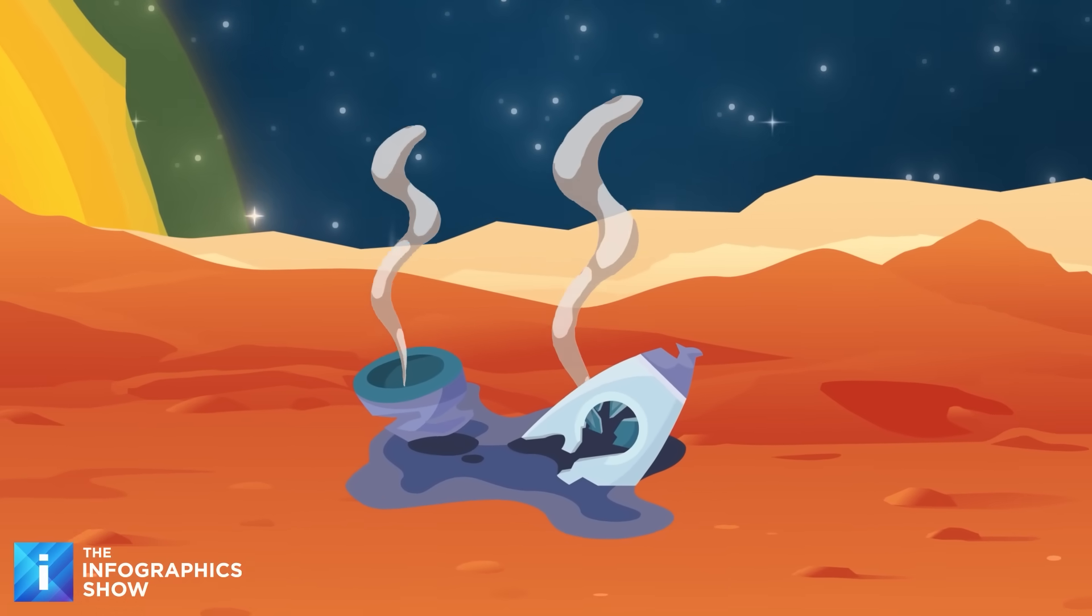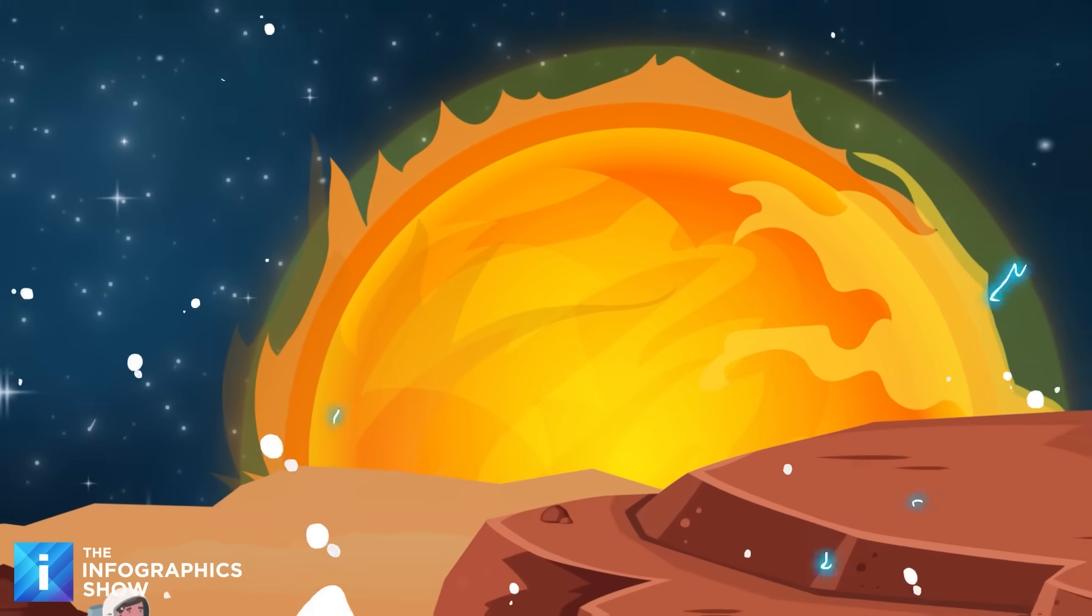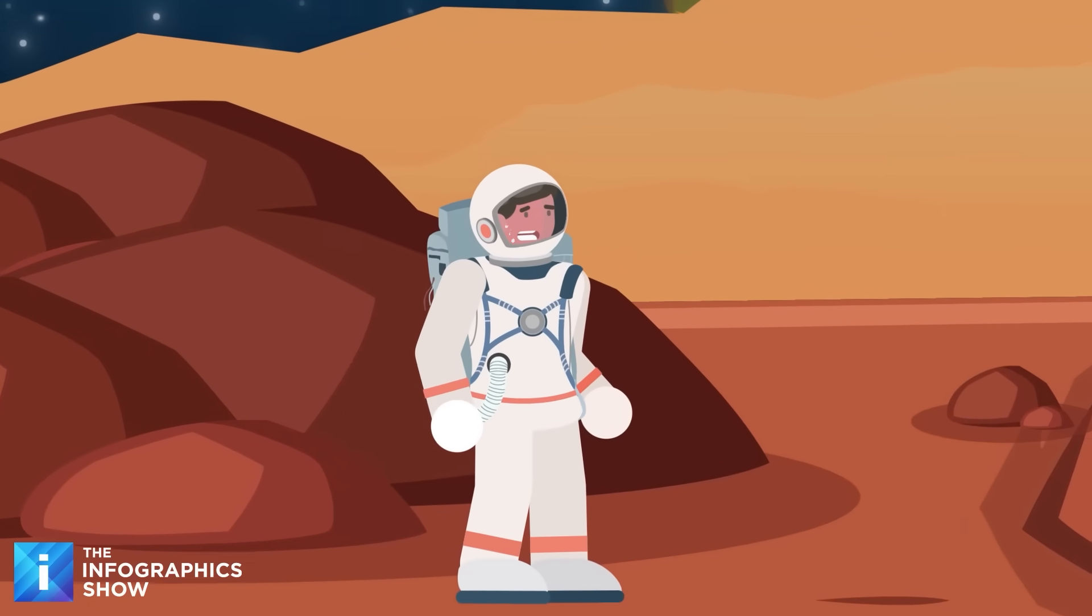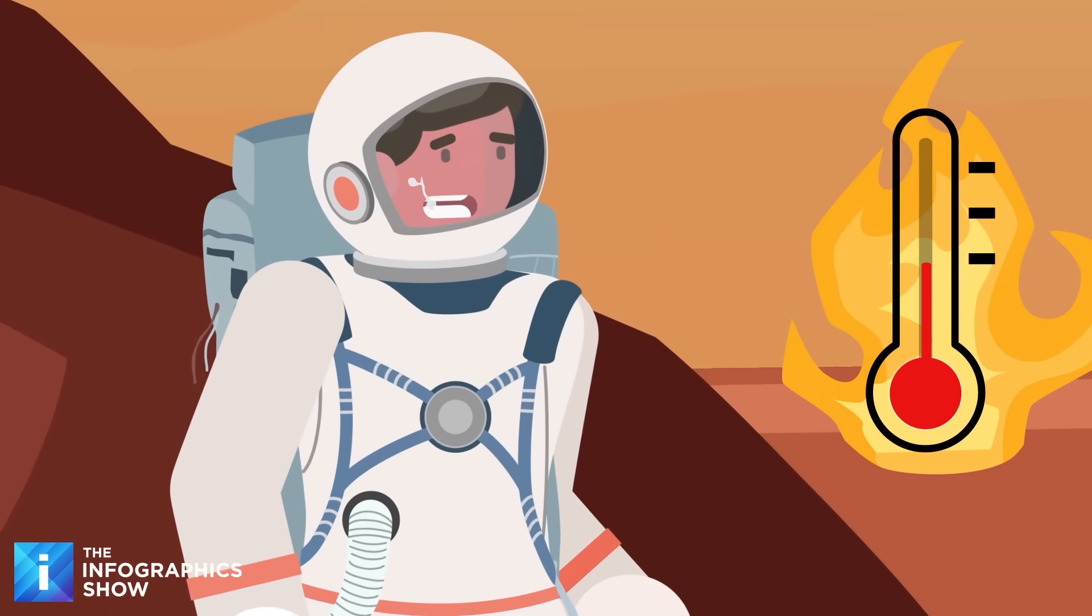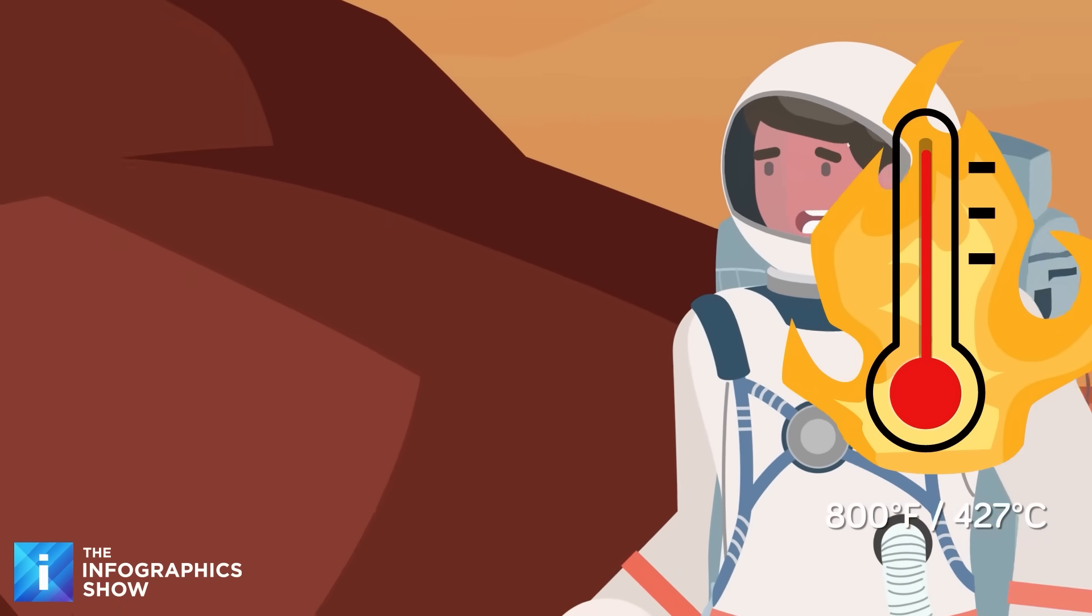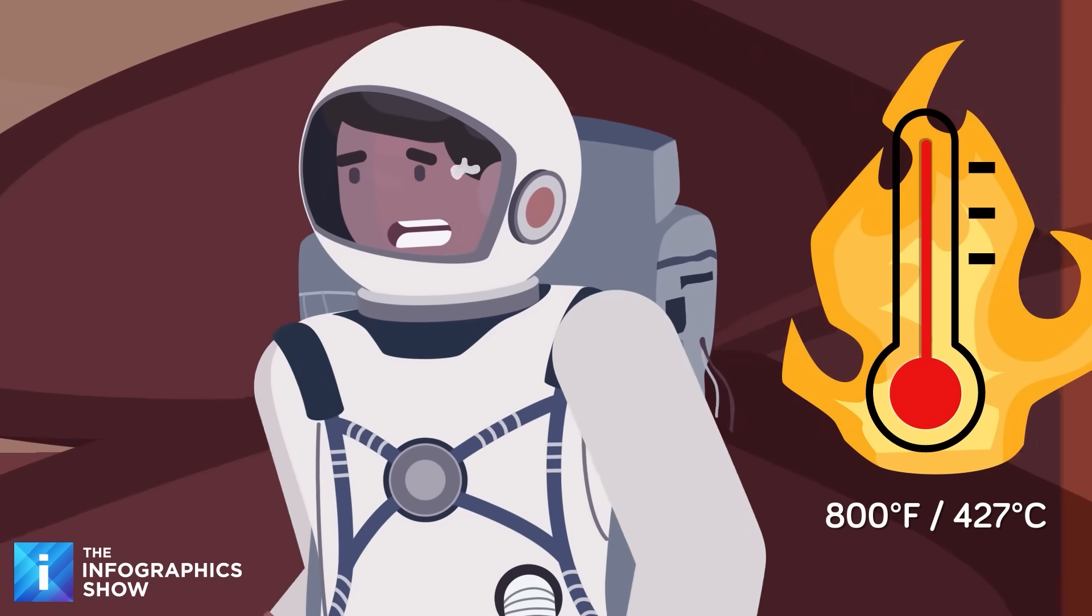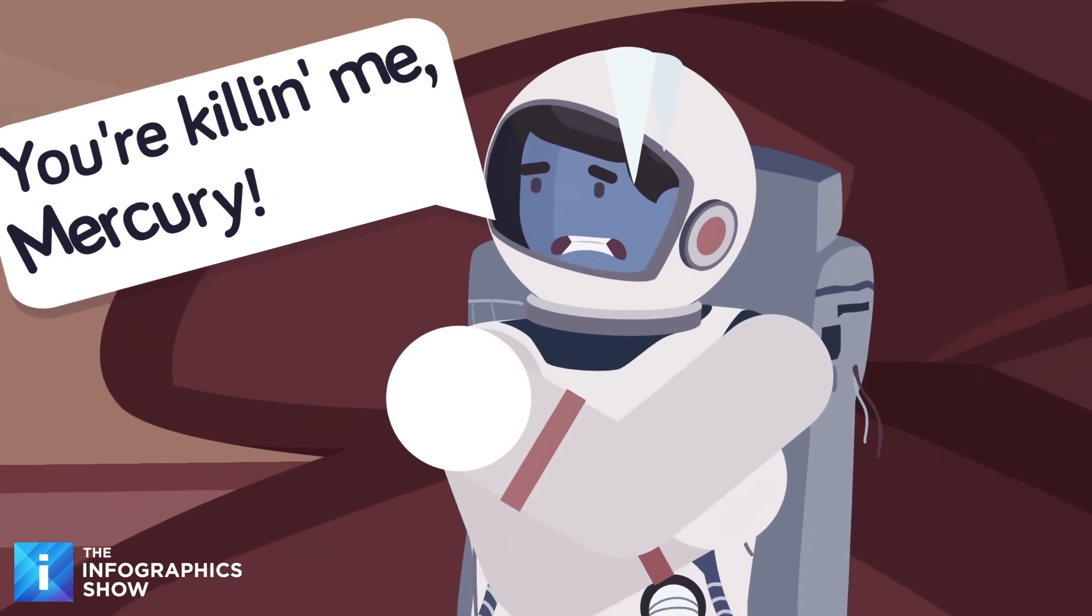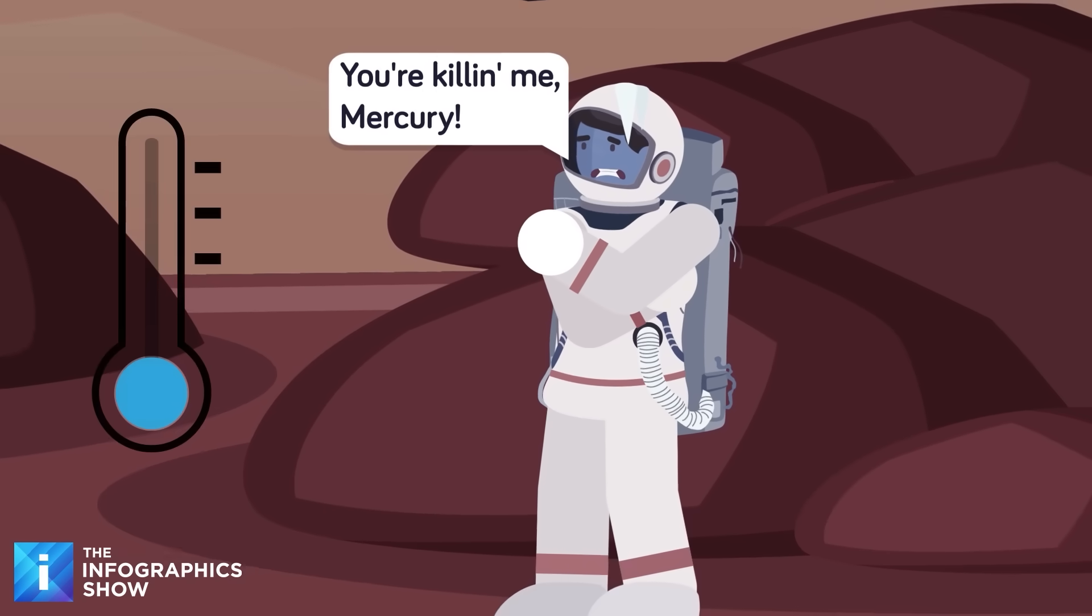You might think that being so close to the sun means extreme heat, and that is partially true. On the sun-facing side, you would be faced with temperatures of up to 800 degrees Fahrenheit, which would literally cook you alive in seconds. But on the dark side of Mercury, the temperatures are no less extreme, albeit much, much colder.